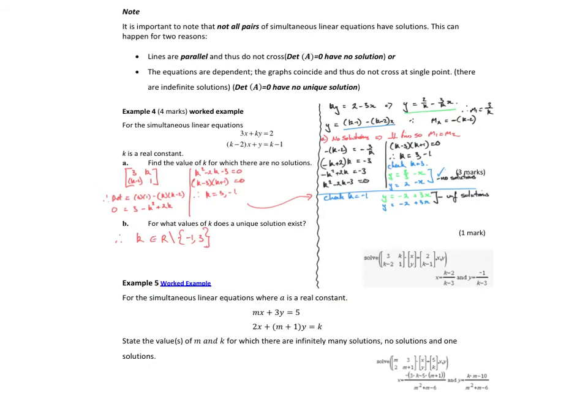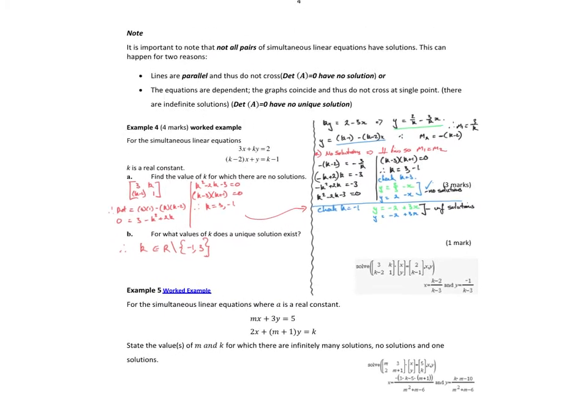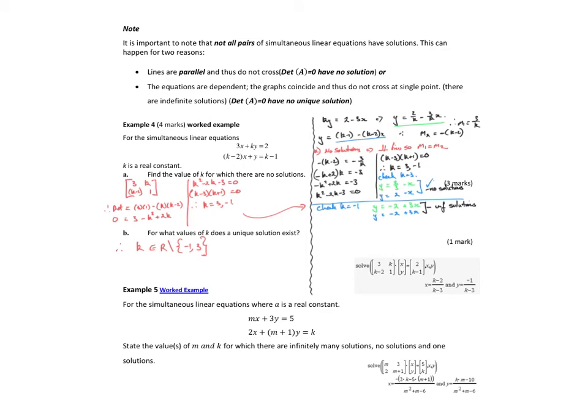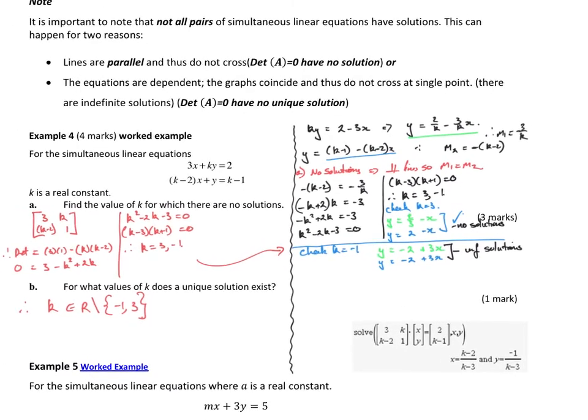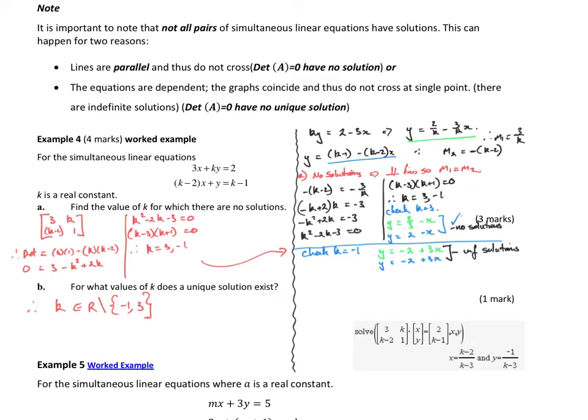So, if we want to move into solving simultaneous equations and trying to find out for what values or when my equations are parallel or when they're the same, an equivalent way of doing that is to find where the determinant is 0. Let's have a look at this example. I've solved it in two different ways. Let's start with the right-hand side first. So I've got these equations here: 3x plus ky equals 2, and (k minus 2) times x plus y equals k minus 1. So I'm looking for the k values that give me no solutions, which means I'm looking for the k values that make those two equations parallel.